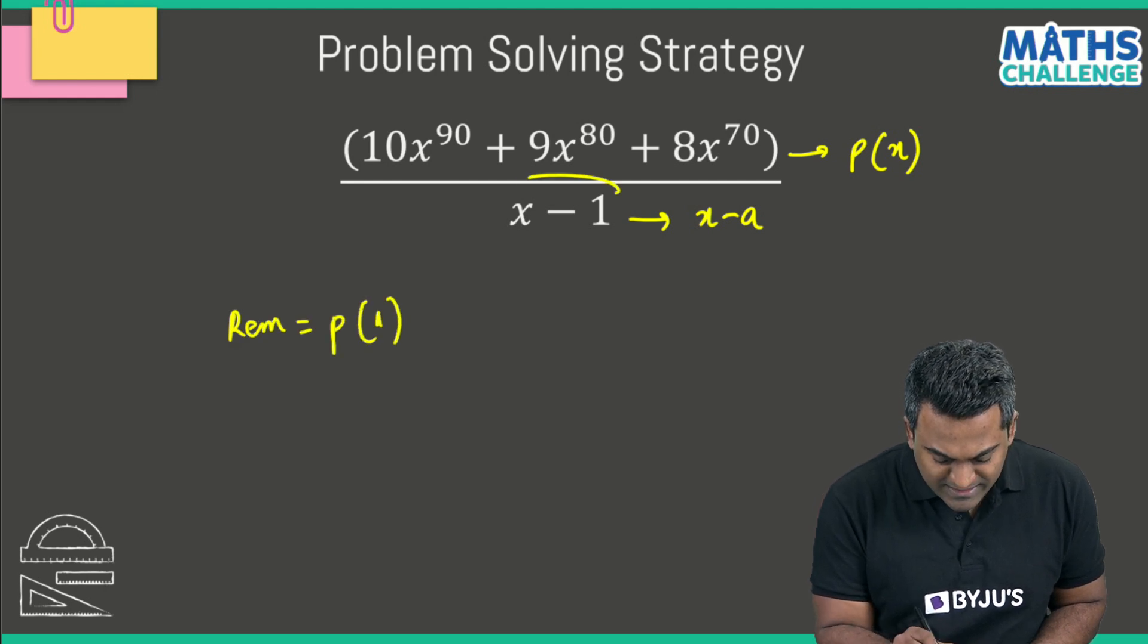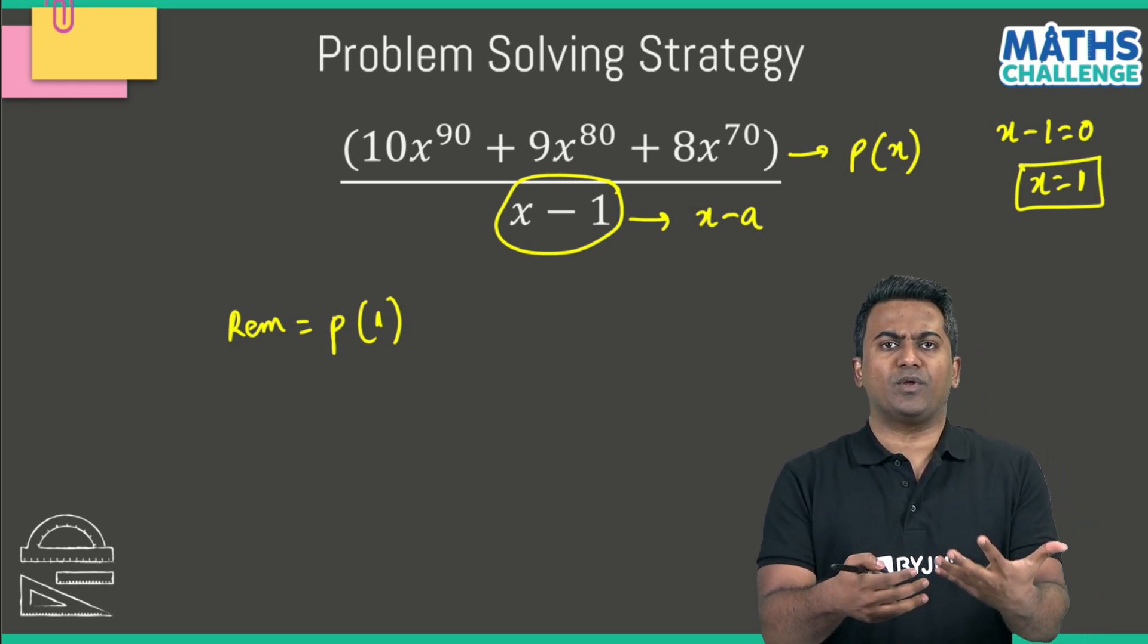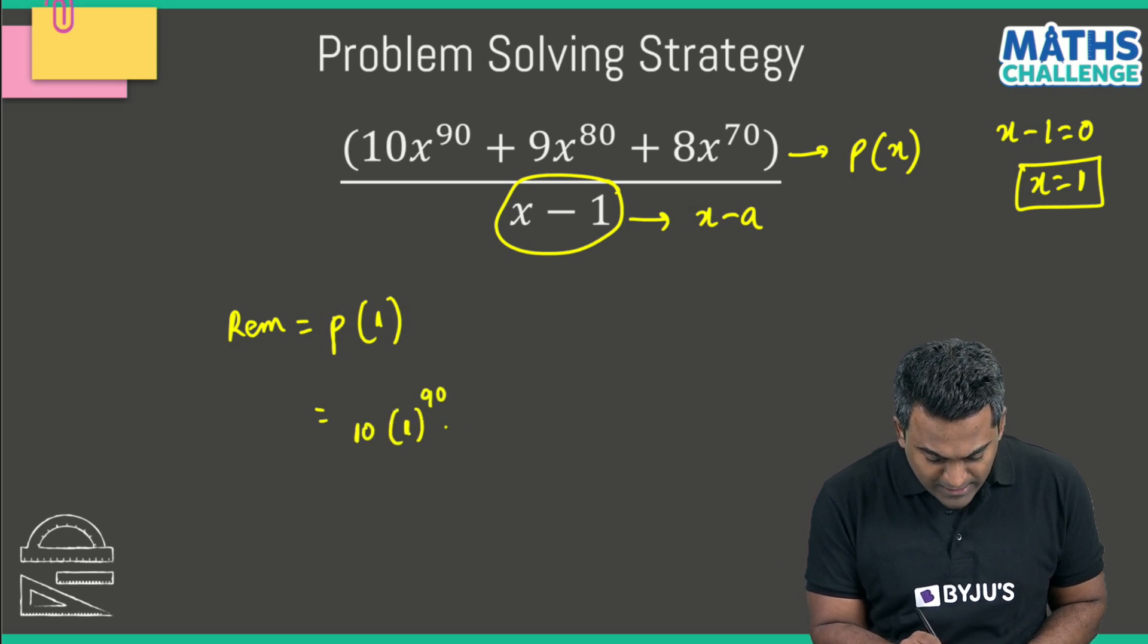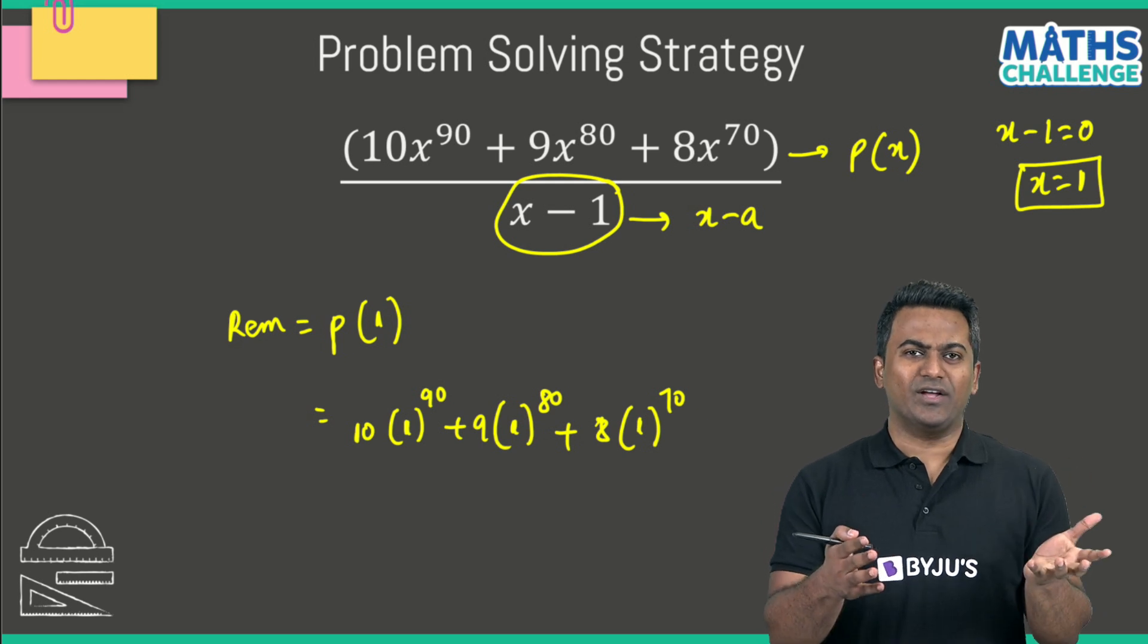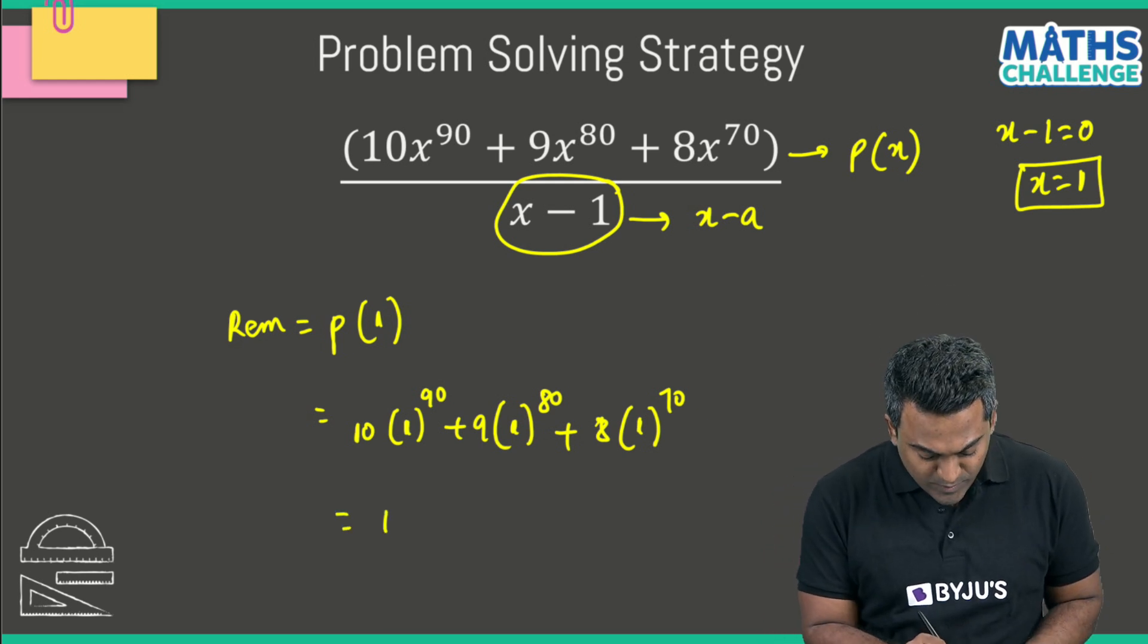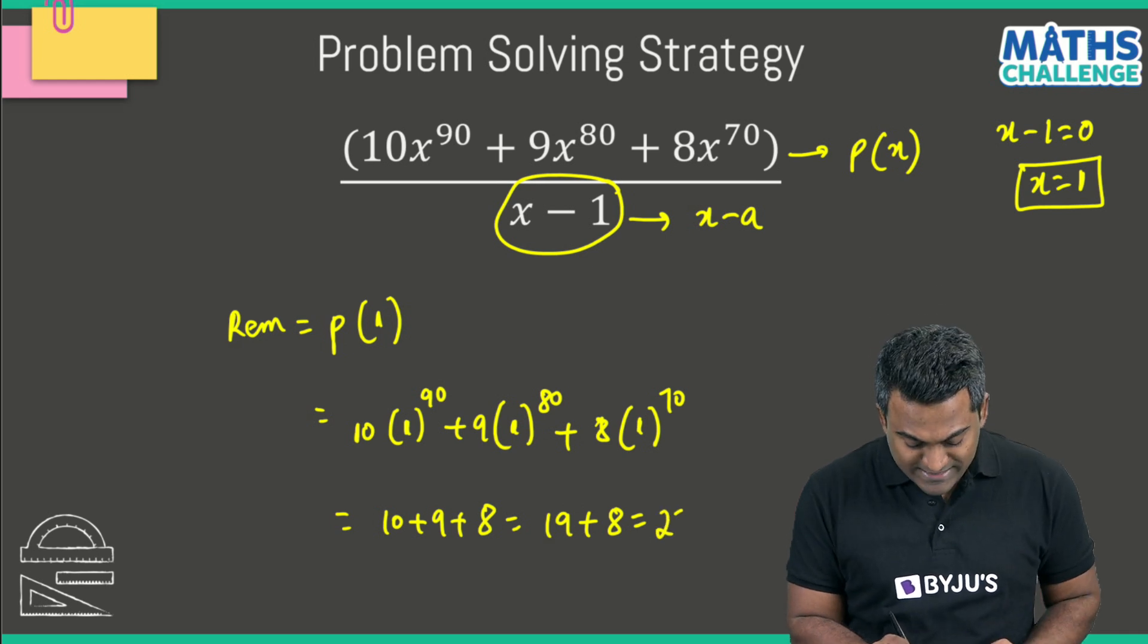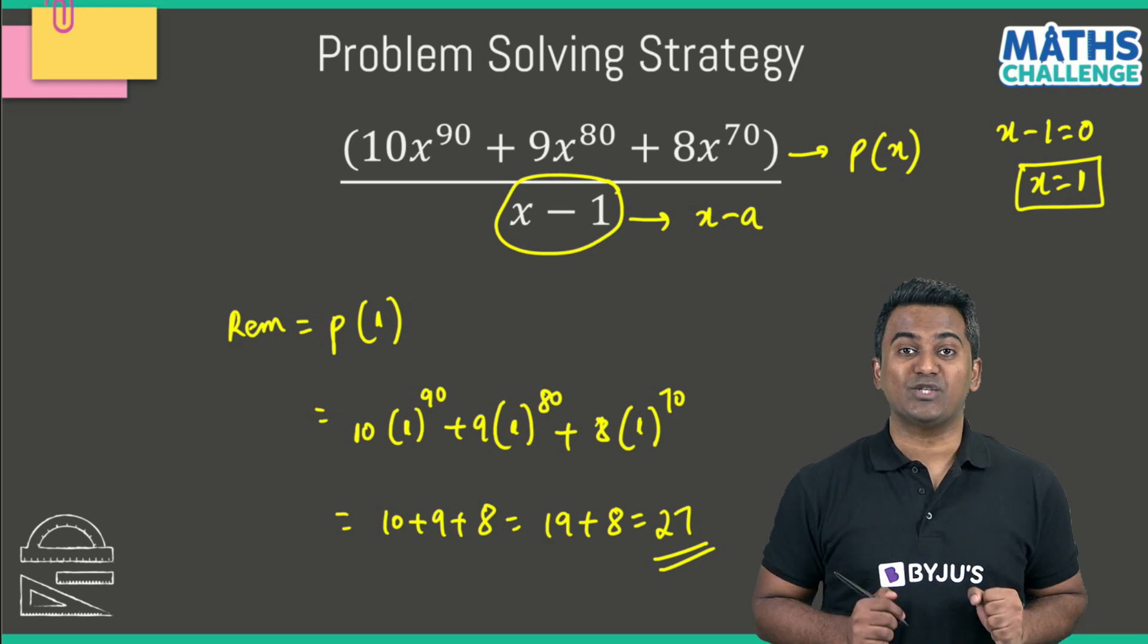The divisor is x minus 1. I equate that to 0, which happens for the value x equals 1. So the remainder is going to be simply p(1), which is 10 multiplied with 1 to the power 90 plus 9 multiplied with 1 to the power 80 plus 8 multiplied with 1 to the power 70. Now 1 to any power is 1, so this boils down to 10 plus 9 plus 8. This is 19 plus 8, which gives you 27. So applying the remainder theorem, the answer is 27.